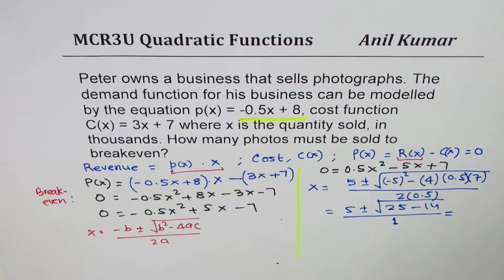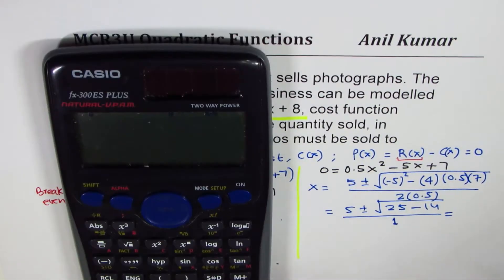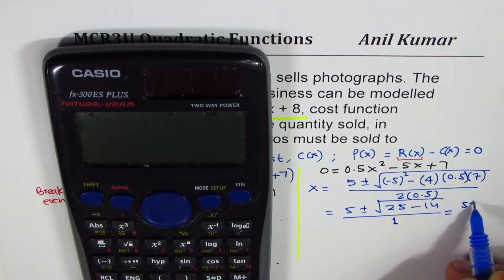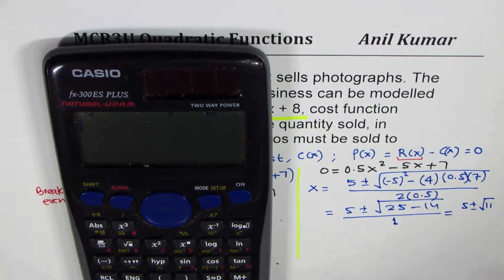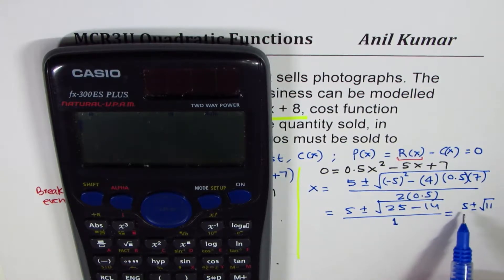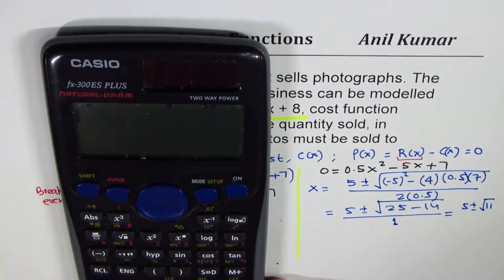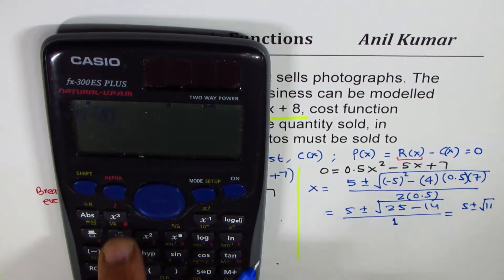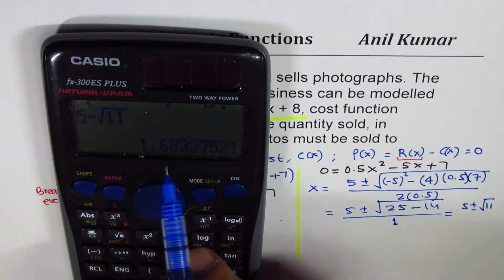Now, we can actually use the calculator and figure this out. So we have 5 plus or minus, let's calculate the square root part, which is 5 plus or minus square root of 11. So square root of 11 is kind of less than 5. So we will take the positive or negative values. We could take actually both in this particular case.